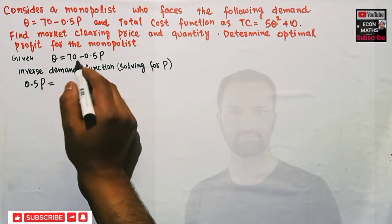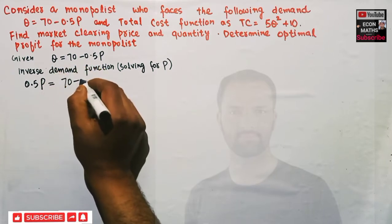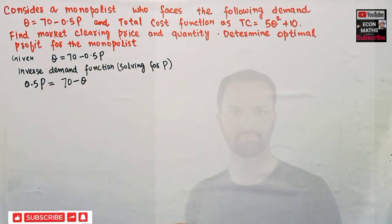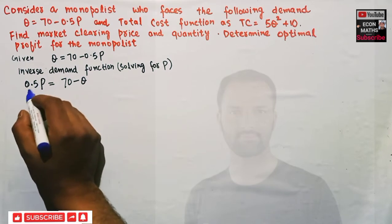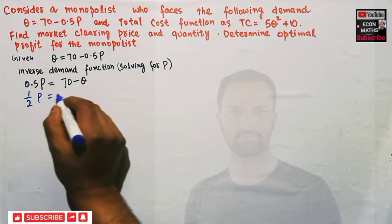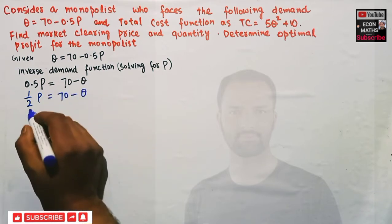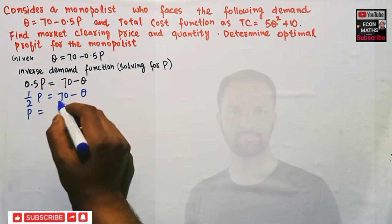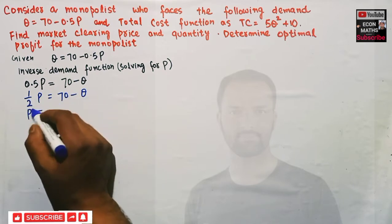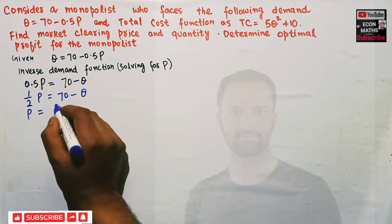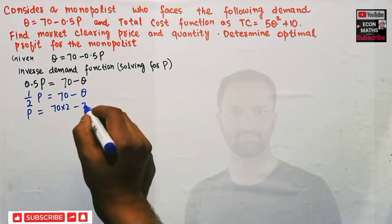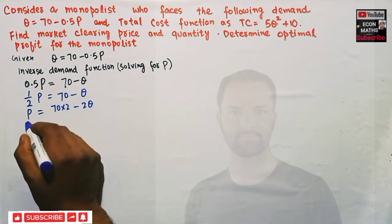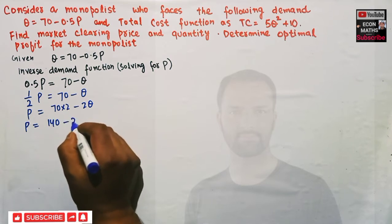If we transpose and solve for P: 0.5P = 70 - Q, and since 0.5 can be written as 1/2, we get P = (70 - Q) × 2, which gives us P = 140 - 2Q. This is our inverse demand function.